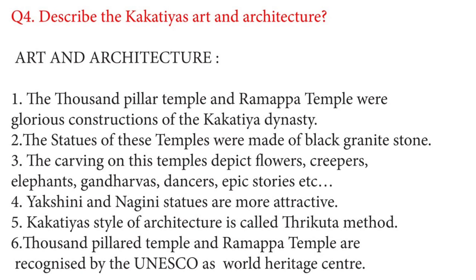Question No. 4: Describe the Kakathiyas Art and Architecture. Answer. The Thousand Pillar Temple and Ramappa Temple were glorious constructions of the Kakathiya dynasty. The statues of these temples were made of black granite stone. The carvings on these temples depict flowers, creepers, elephants, Gandharvas, dancers, epic stories, etc. Ekshini and Nagini statues are more attractive. Kakathiyas style of architecture is called the Trikuta Method. The Thousand Pillar Temple and Ramappa Temple are recognized by UNESCO as World Heritage Sites.